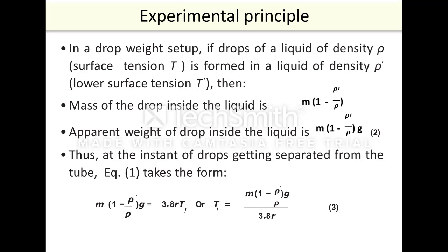Thus, at the instant of drops getting separated from the tube, equation 1 takes the form: m(1 minus ρ'/ρ)g equals 3.8R times T. Or T equals m(1 minus ρ'/ρ)g divided by 3.8R.